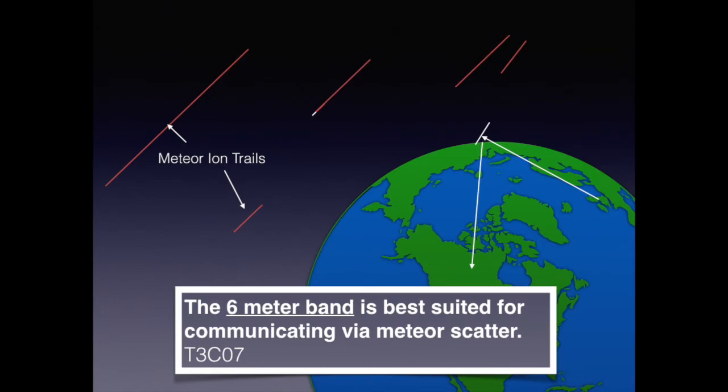We can't see every meteor that enters the atmosphere, but they occur multiple times per second. Entering the Earth's atmosphere, they superheat, creating an ion trail. This ion trail can be exploited for long distance communications. For the test, you should know that the six meter band is best suited for communicating via meteor scatter.